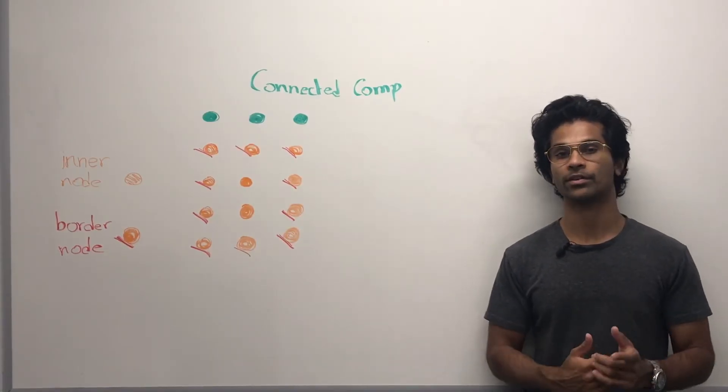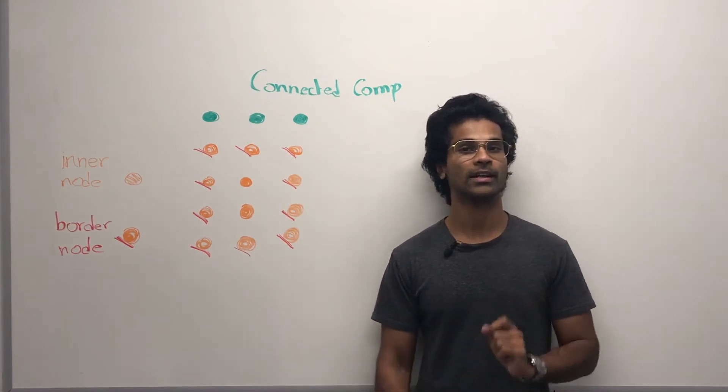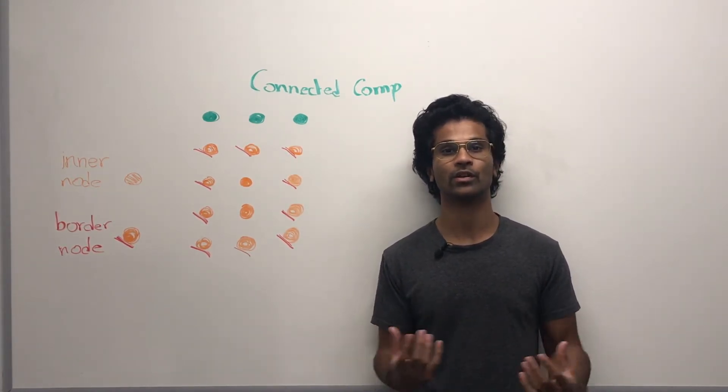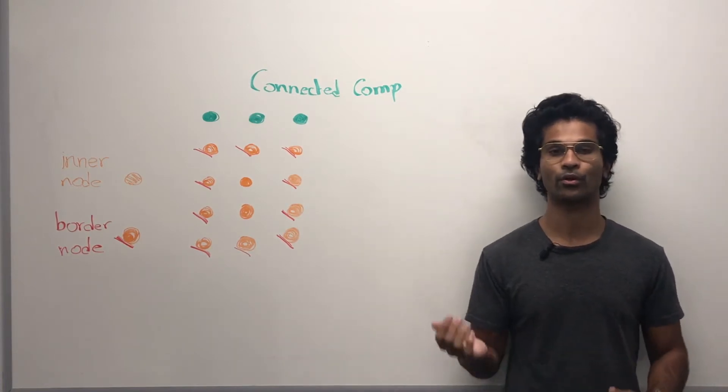First, let's go over some graph theory. Here are some connected components. Remember, a connected component is any collection of nodes that are next to each other and they have the same color or same number or some similar property.